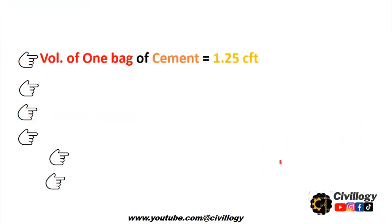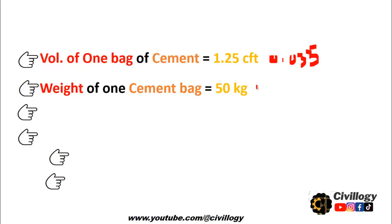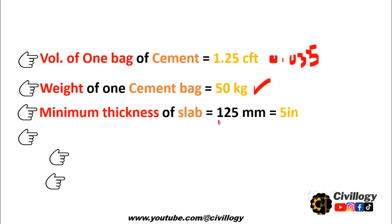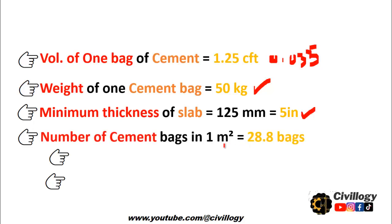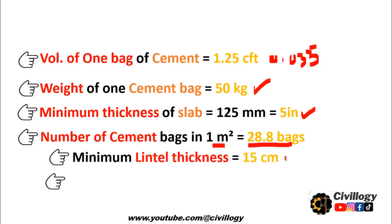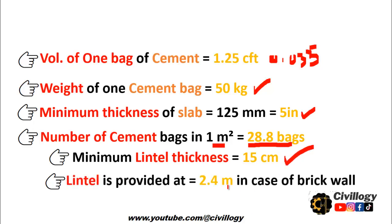The volume of one bag of cement is 1.25 cubic feet, which is equal to 0.035 cubic meters. The weight of one cement bag is 50 kg. The minimum thickness of slab is equal to 125 millimeters or 5 inches. The number of cement bags in one cubic meter is 28.8 bags. The minimum lintel thickness should be 15 centimeters, and the lintel is provided at 2.4 meters in the case of a brick wall.